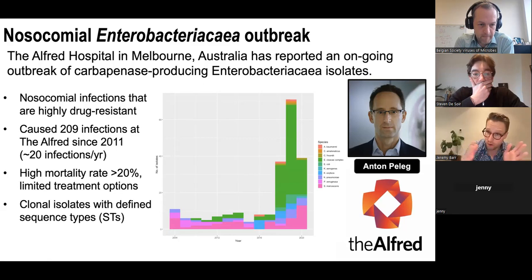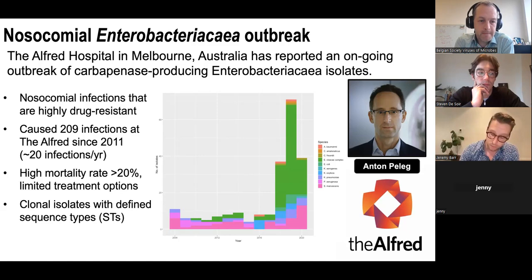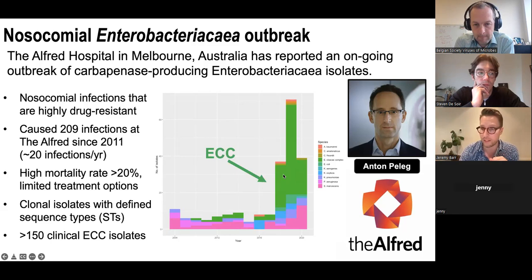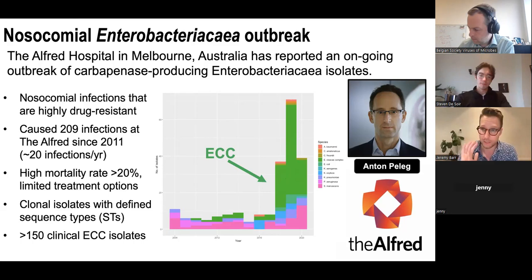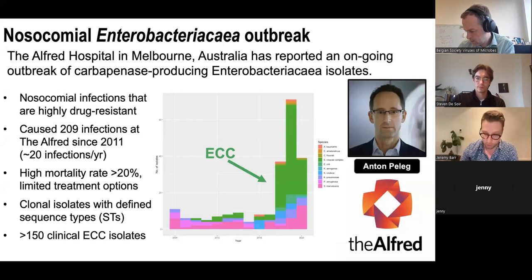The Alfred team has been documenting these infections for over 15 years — isolates are stored, cultured, and whole-genome sequenced. I want to particularly emphasize a big green cluster that's become prominent over the last three to four years, caused by Enterobacter cloacae complex — a group of seven bacterial species I'll simply refer to as ECC. At the time we started this study, Anton's team had over 150 clinical isolates from bloodstream infections, giving us a great starting sample set to build a phage treatment.